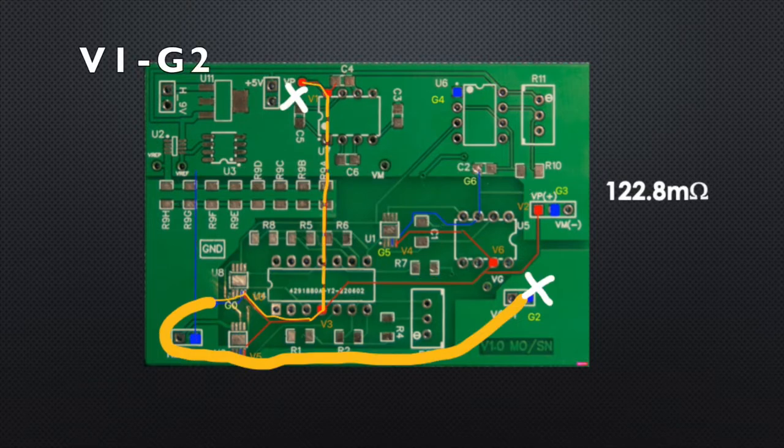The next couple of points are between V1 on the top of the board and G2 on the bottom side of the board. Again, a very contrived example, but you can see that the resistance came out to be 122.8 milliohms, mostly due to the long connection from the top to the bottom on the other side of the board, plus some short traces on the bottom side of the board.